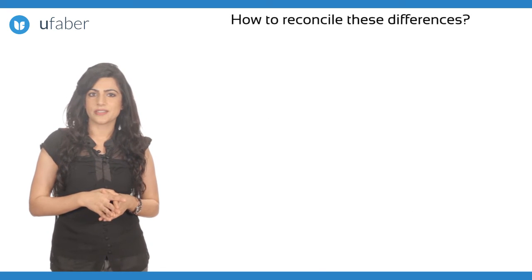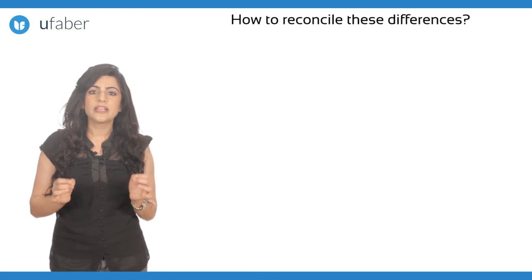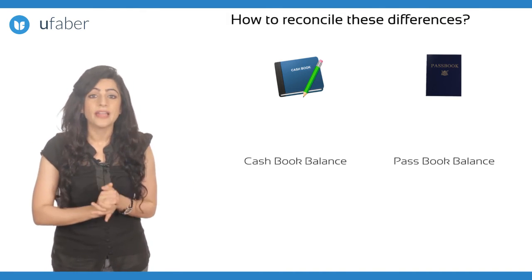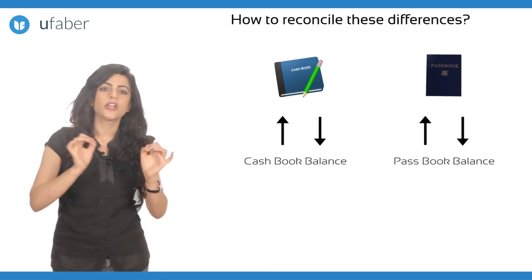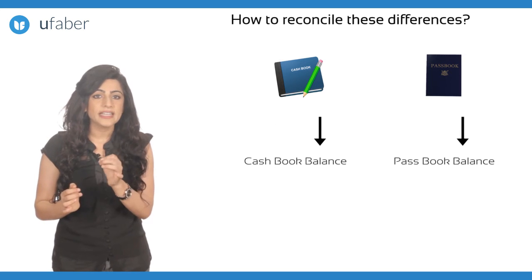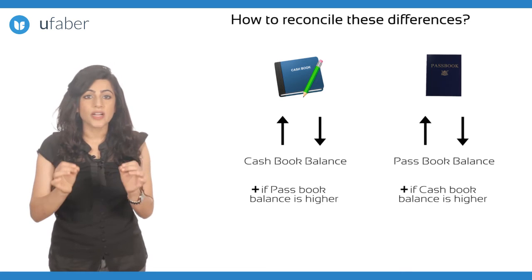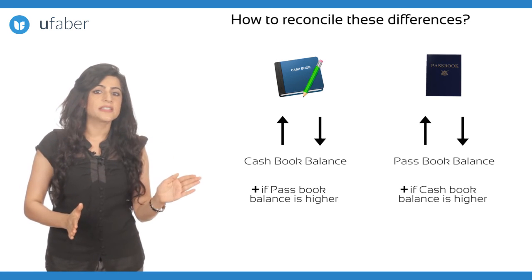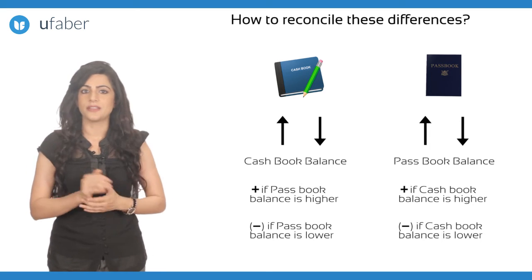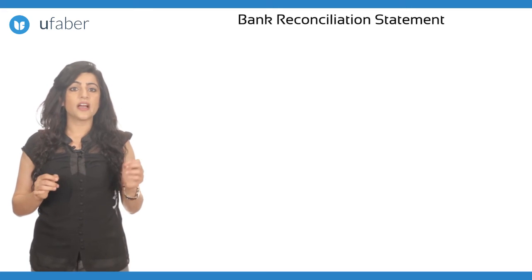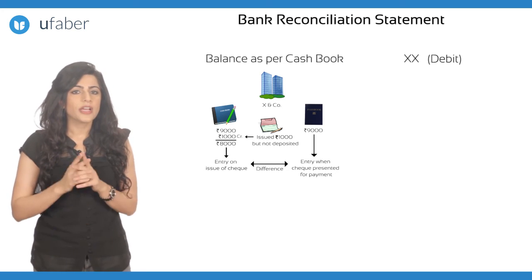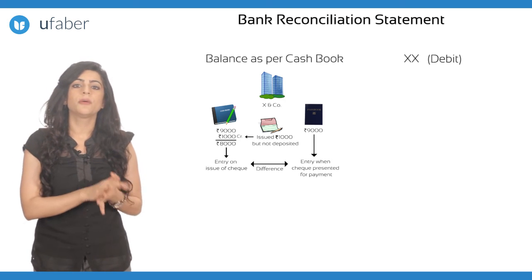How to reconcile these differences? When causes of differences are known, reconciliation can be done by starting with the balance of any of the books. Given the causes of disagreement, the balance of the other book can be either more or less. If the balance of the other book is more on account of the said causes, then add the amount to the starting balance. If it is less, then subtract the amount. For example, if reconciliation starts with the debit balance as per the cash book and there is a cheque deposited in the bank but not cleared, then on account of non-clearance of the cheque, the credit balance of the pass book would be less.